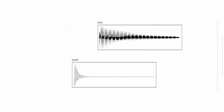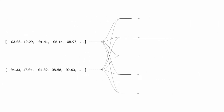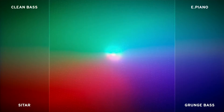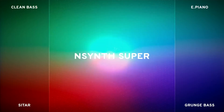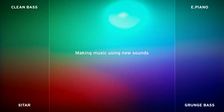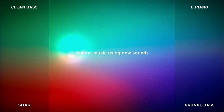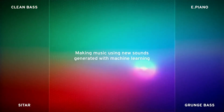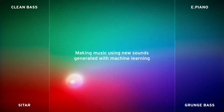It uses deep neural networks to learn the characteristics of sound and create entirely new sounds based on these characteristics. By combining sounds of various instruments playing, the algorithm can create a totally different sound that is still a combination of the two.